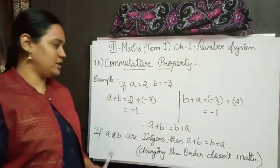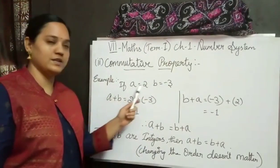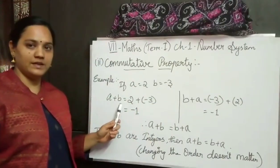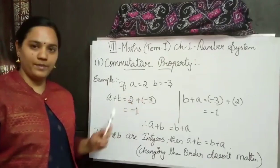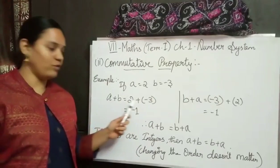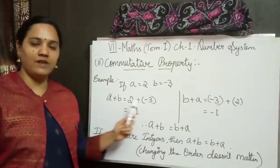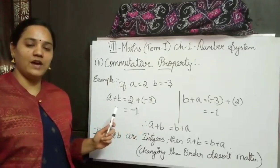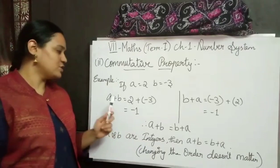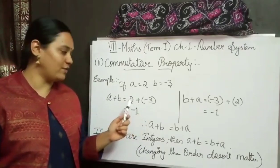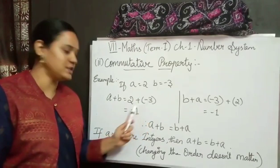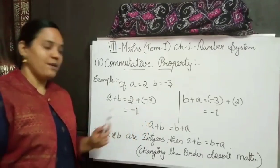Commutative property. For commutative property also I have taken a as 2 and b as minus 3, and I found out a plus b, that is the sum of these two numbers. We know that the value of a is 2 and the value of b is minus 3. We know the rule: different sign means we have to subtract, and finally write the greatest number sign. Here also we have different sign, so subtracting I got the answer as minus 1.